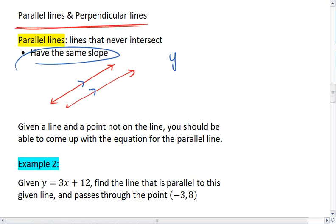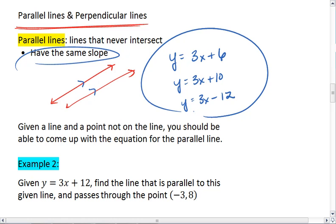For example, if a line has a slope of positive 3, then a line parallel to it must also have a slope of positive 3. So all three of these lines are parallel.